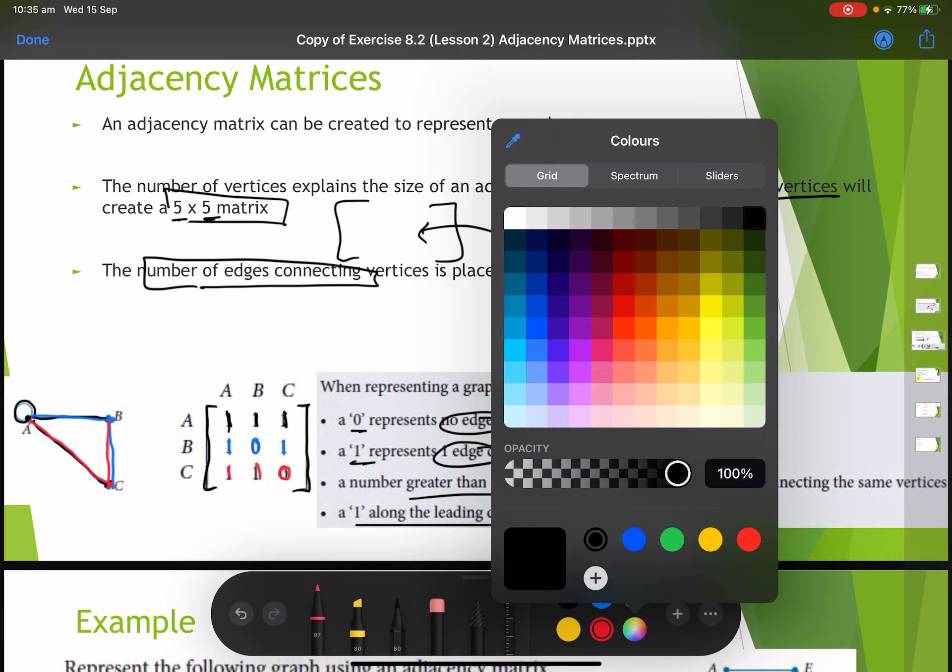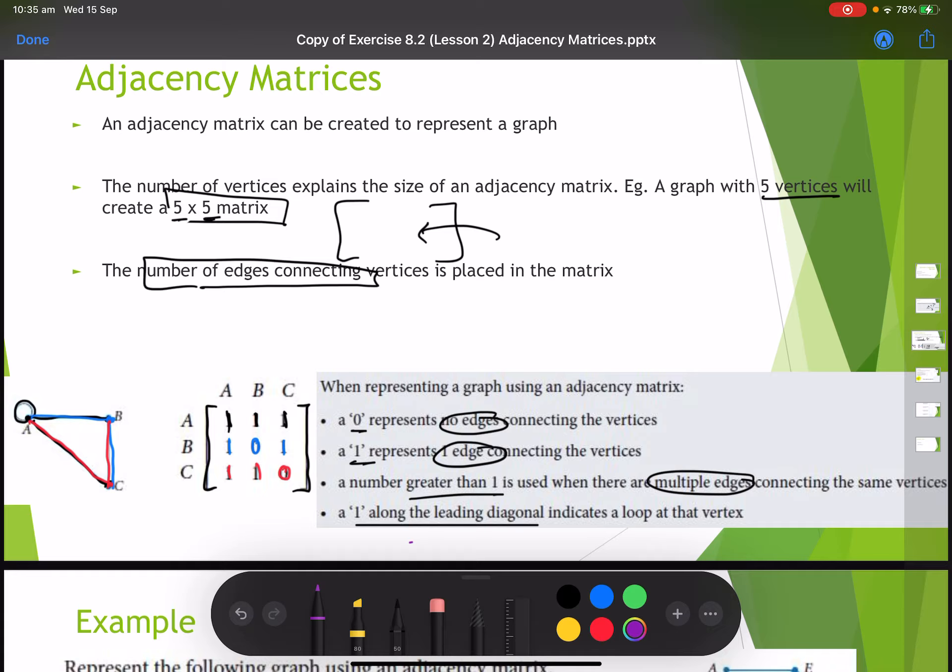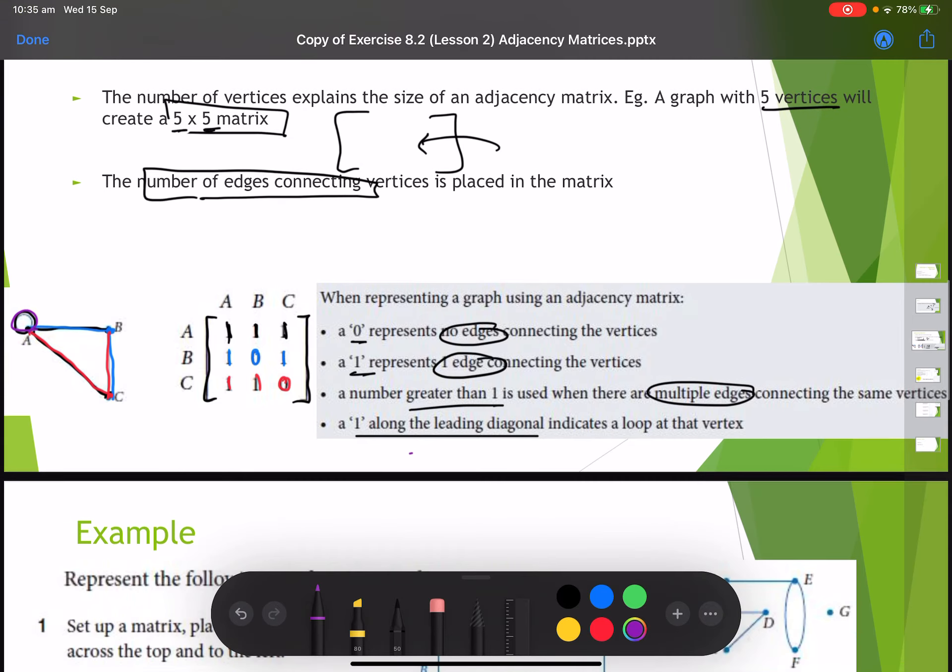The only thing to highlight is obviously here a loop usually would have a degree of two when calculating the degree of a vertex. But for an adjacency matrix, it's only going to count as one edge. So that's just a little side note.